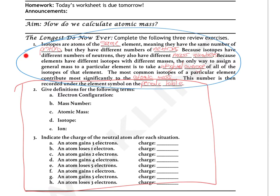Because isotopes have different numbers of neutrons, they also have different mass numbers. Because elements have different isotopes with different masses, the only way to assign a general mass to a particular element is to make a weighted average of all of the isotopes of that element. The most common isotopes of a particular element contribute most significantly to the atomic mass. This number is then recorded under the element symbol on the periodic table.